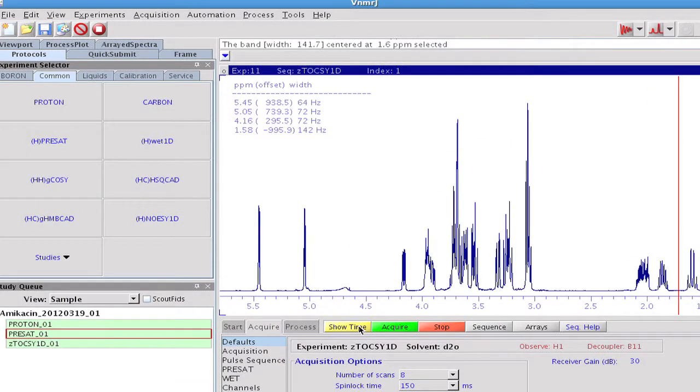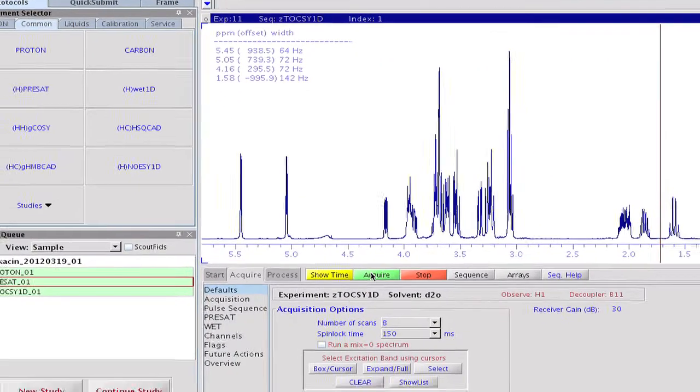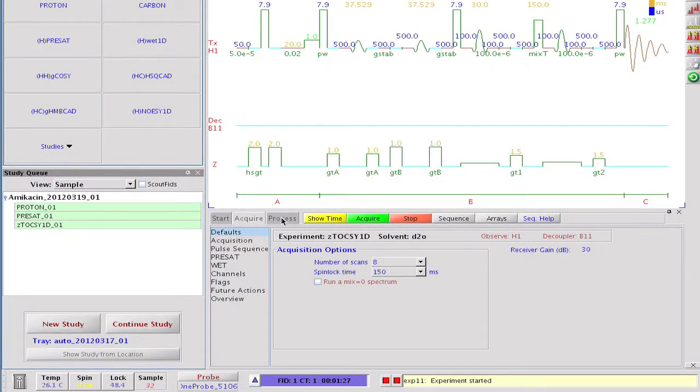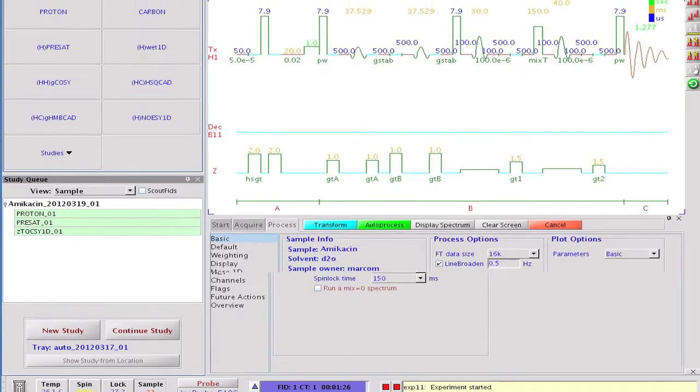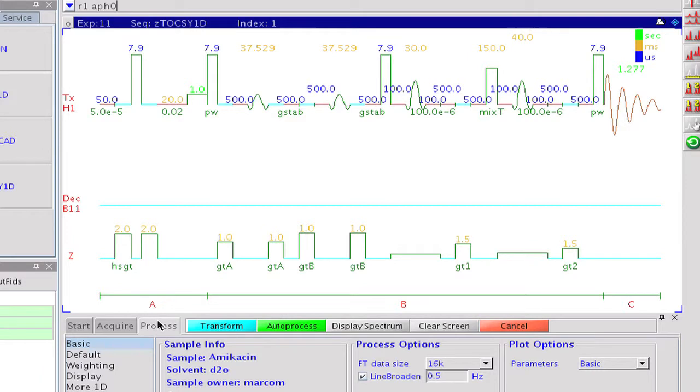Using the current parameters, the total experiment time is about one and a half minutes. When we click the acquire button, all requested shape files are created by Pandora's box, Agilent's powerful pulse shaping engine. The relevant parameters are updated and the four data sets are arrayed before data acquisition begins.